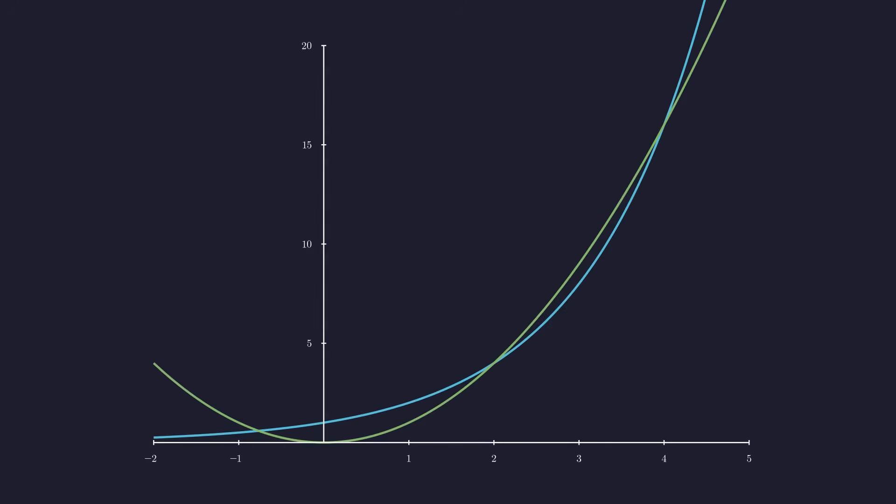For one final, satisfying confirmation of our work, let's visualize all three solutions together. Here's our coordinate system one more time. And here are our two players, the exponential function in blue and the quadratic in green. And there they are, our three intersection points, marked and labeled. It's quite satisfying to see how our rigorous mathematical analysis perfectly matches what we can observe visually.